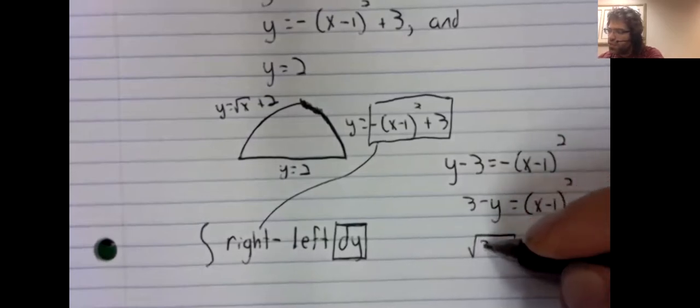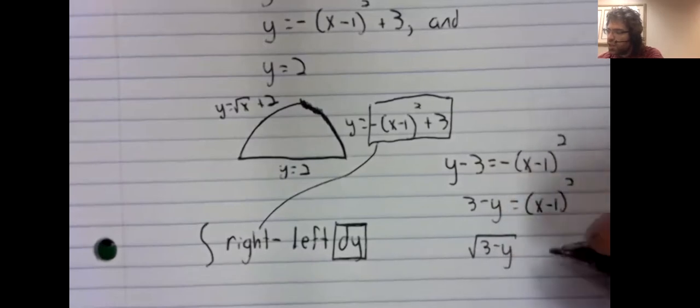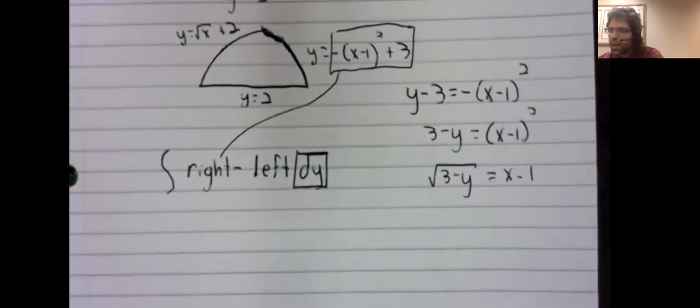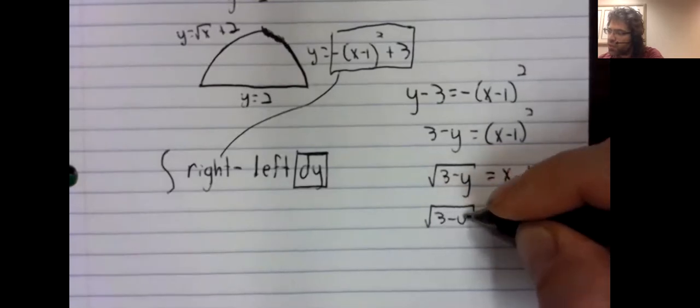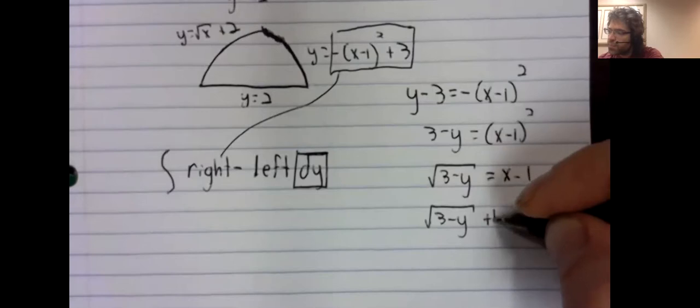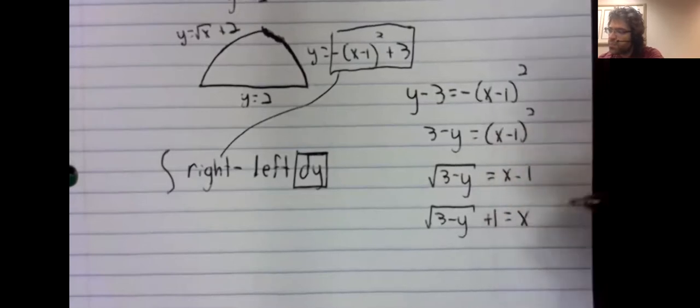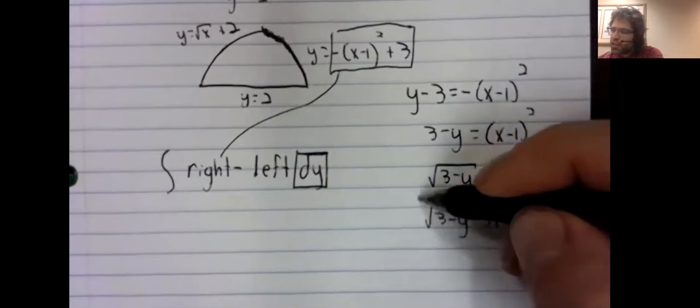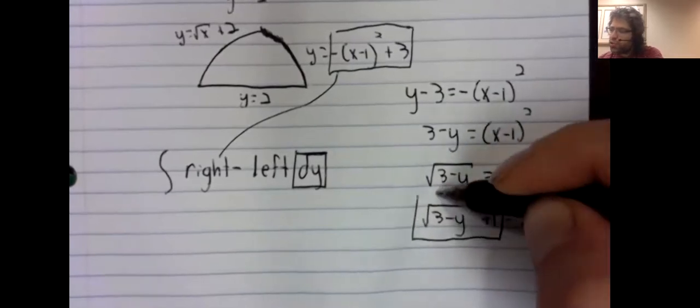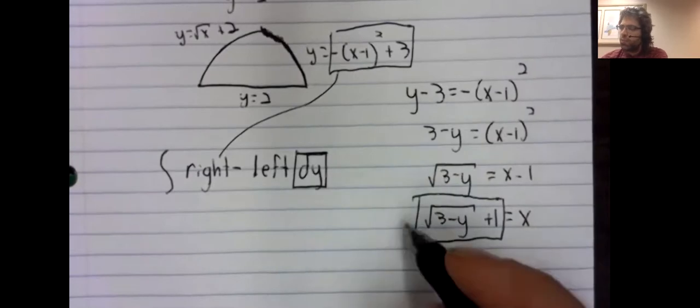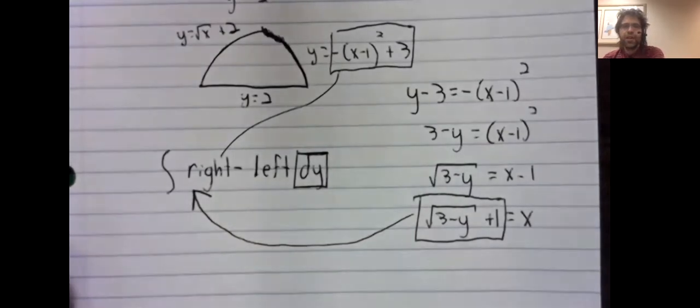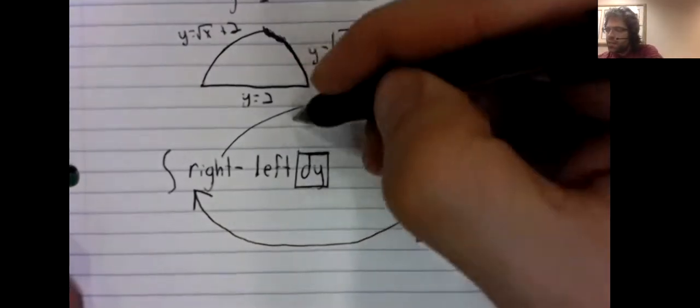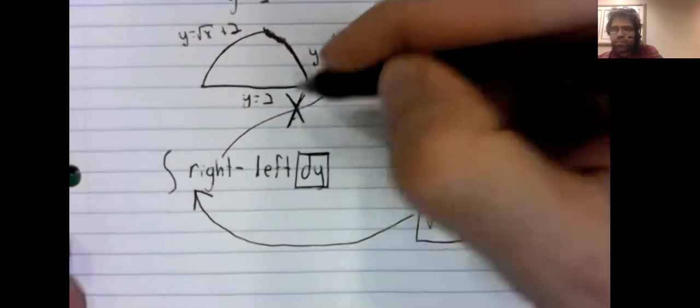So for example, if we just took that and stuck it in there, we would be making an error. What we have to do is rewrite this to be a function of y instead of a function of x. Which, at least in this case, isn't the hardest thing to do, but it is additional steps that have to be done.